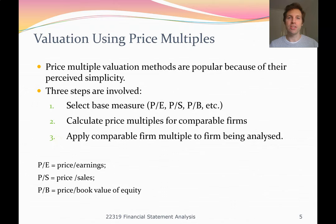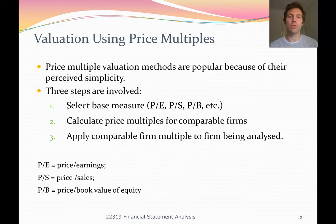The price multiples method is by far the most commonly used method that people use to get a value of a company — very popular because it's very easy and simple to apply. There are three steps: first, you select a multiple such as the PE ratio (price to earnings), the price to sales ratio, or the price to book ratio. We calculate this ratio for competitor firms, and then apply the competitor's ratio to our company's financial statement information to get a valuation.